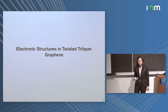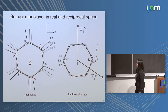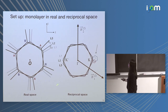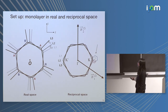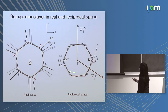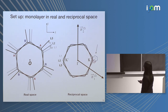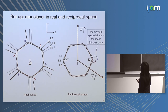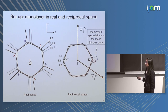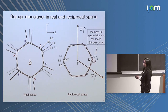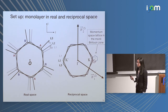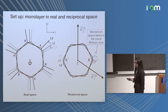Now let's move on to the electronic states modeling in twisted trilayer graphene. Here is a reminder of our system geometry: we have two different twist angles, θ₁₂ and θ₂₃, between the two pairs of adjacent layers. In reciprocal space, you still have a hexagonal momentum space lattice, and if you zoom in near the Dirac point, you can have a momentum space lattice at the scale of the supercell Brillouin zone lattice vectors. These two momentum space lattices are actually slightly rotated from each other, and for general twist angles, they don't have to have the same size — which has important consequences for the electronic states modeling.